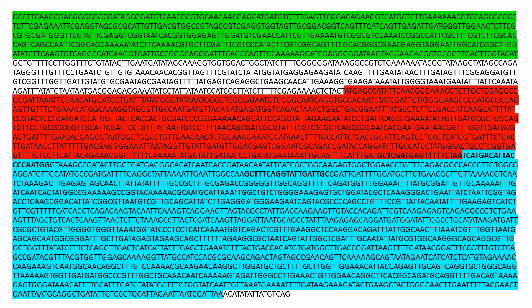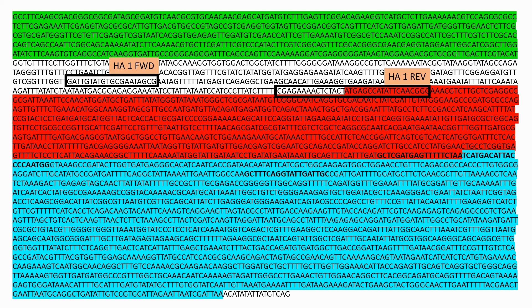Looking again at our genomic sequence, this is now shown with the kanamycin gene inserted and highlighted in red. The potential primer binding site for homology arm 1 forward primer is shown, along with the primer binding site for homology arm 1 reverse — shown with the overhanging sequence for the kanamycin gene. The kanamycin forward primer is highlighted in yellow, along with the overhanging sequence for homology arm 1 reverse.